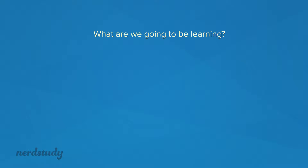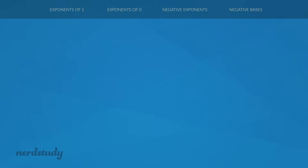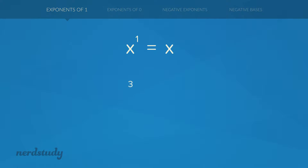In this video we're going to learn about exponents of 1, exponents of 0, negative exponents, and negative bases. First up is exponents of 1. The rule for exponents of 1 is actually quite simple: any number to the exponent of 1 is just the number itself. So x to the exponent 1 equals x. For example, 3 to the exponent 1 is just 3, and 17 to the exponent 1 is just 17.